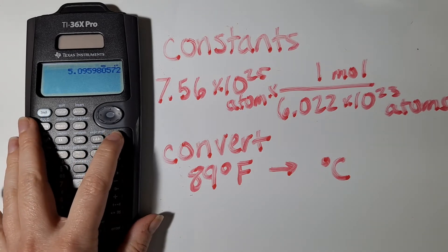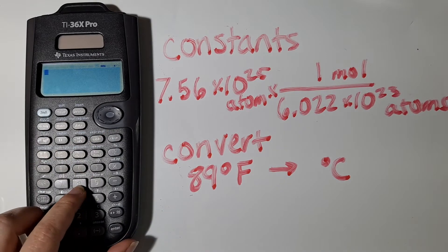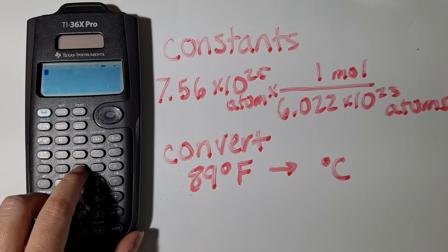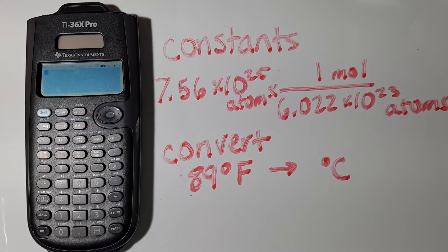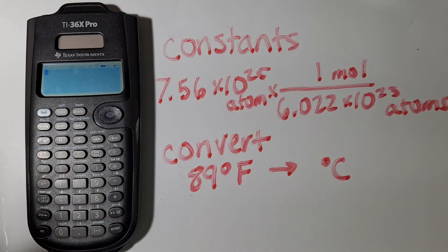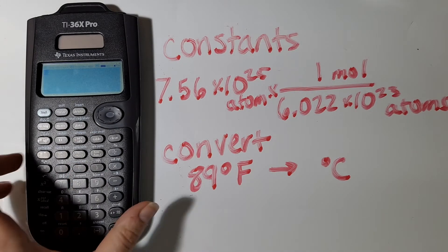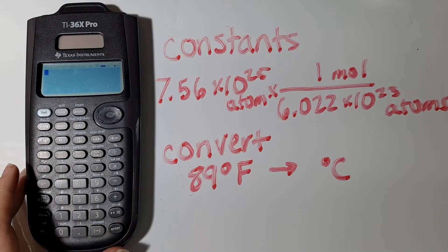So if I turn on my calculator, I can see that above the parentheses, open parentheses, it says constants, and above the number 8, it says convert. Those are the two menu options we're going to be learning about today.